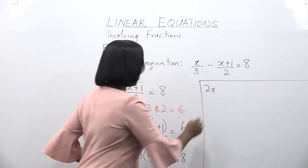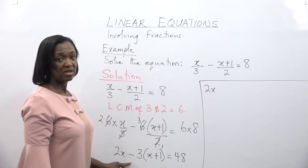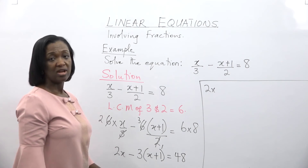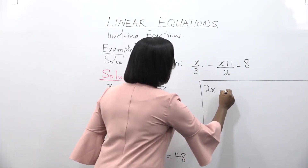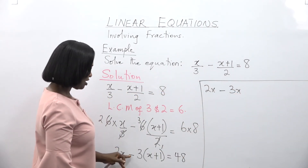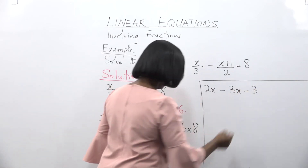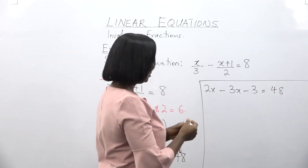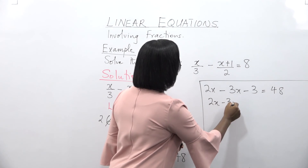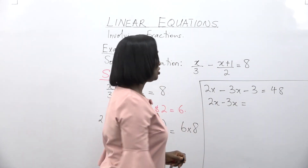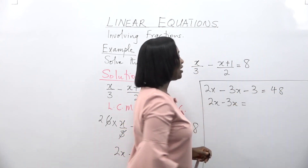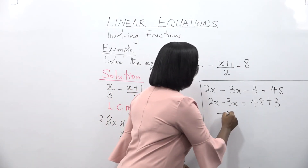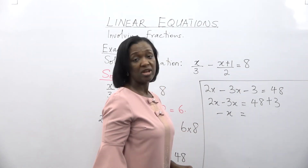So we have 2x. To open up the bracket — there is a minus sign in front — when we open up the bracket, the signs inside will change. So we have 2x minus 3x minus 3 is equal to 48. 2x minus 3 times x is minus 3x, and minus 3 times plus 1 is minus 3. Now group like terms: 2x and minus 3x are like terms. We send minus 3 to the other side, changing from minus 3 to plus 3, making it 48 plus 3.